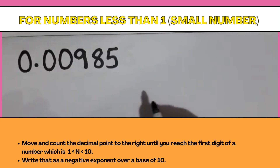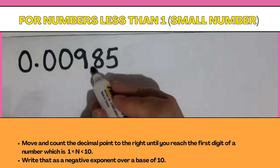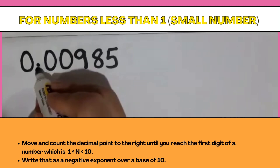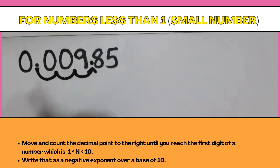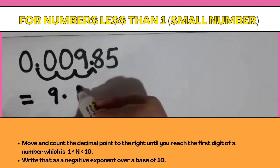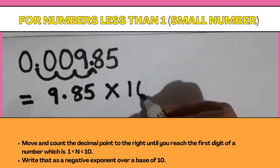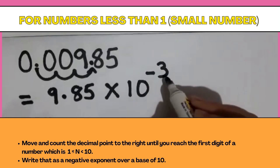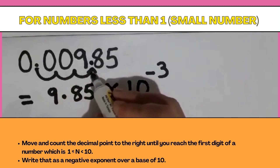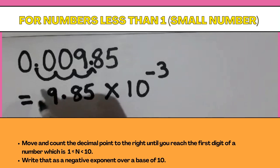Let's have another example: 0.00985. Move and count the decimal point to the right until you reach the first digit greater than or equal to 1 but less than 10 — it's here, between 9 and 8. Count: 1, 2, 3. Expressing the number in scientific notation, it will be 9.85 × 10⁻³, dropping the zeros because they are not significant. The exponent is negative 3 because the decimal point moved 3 places to the right.